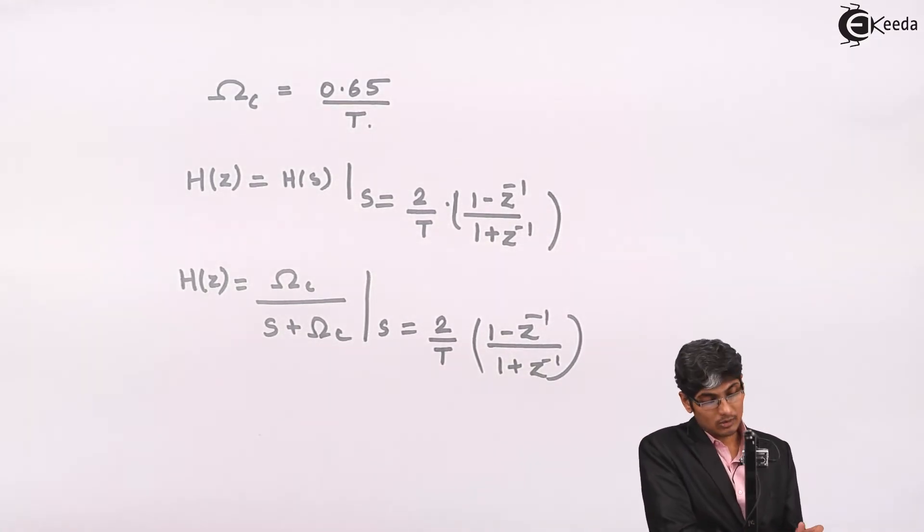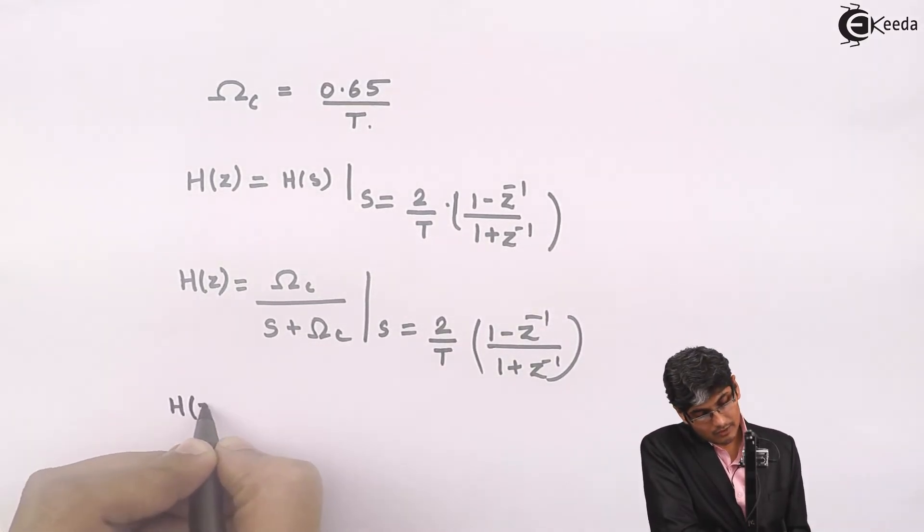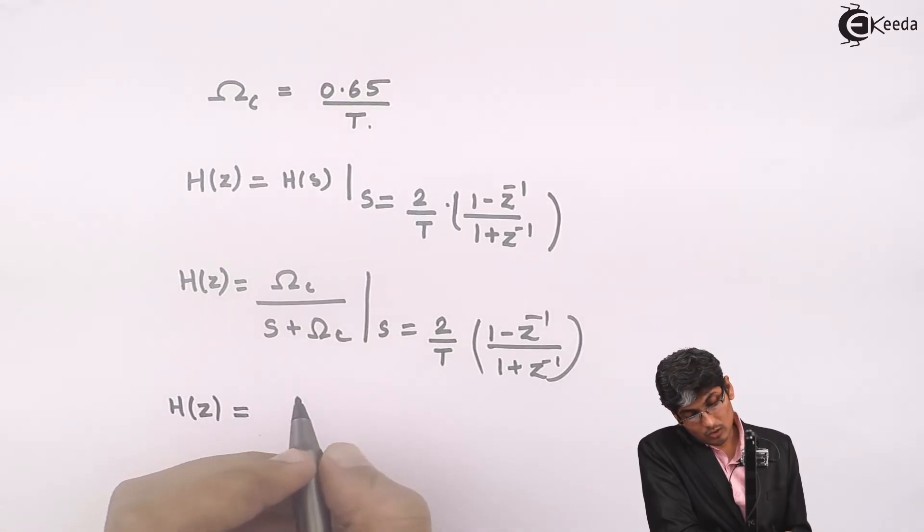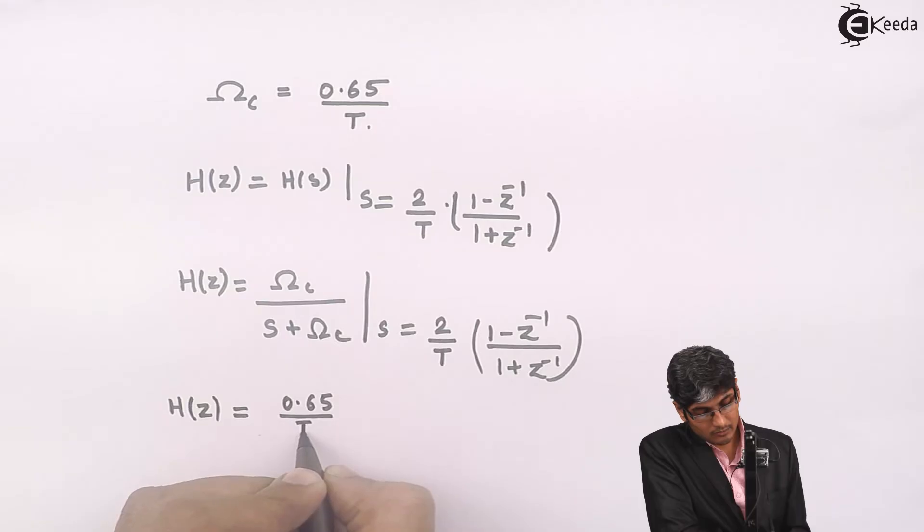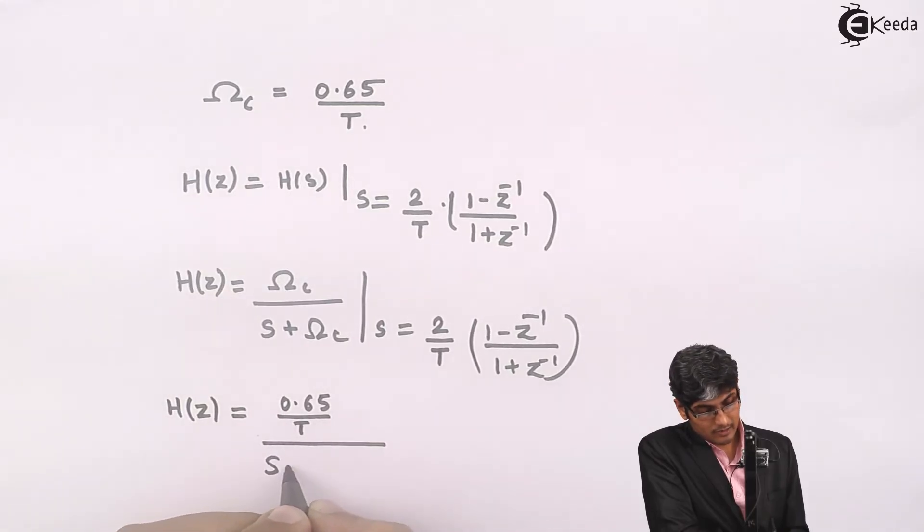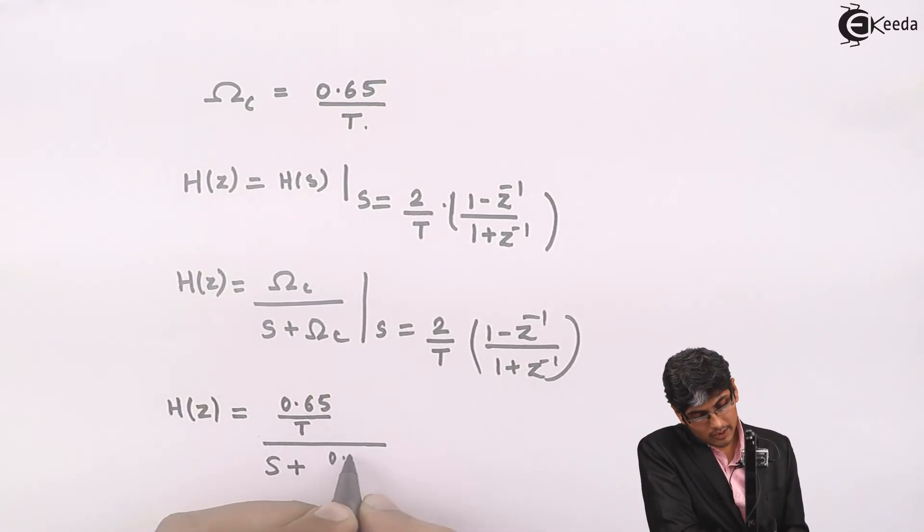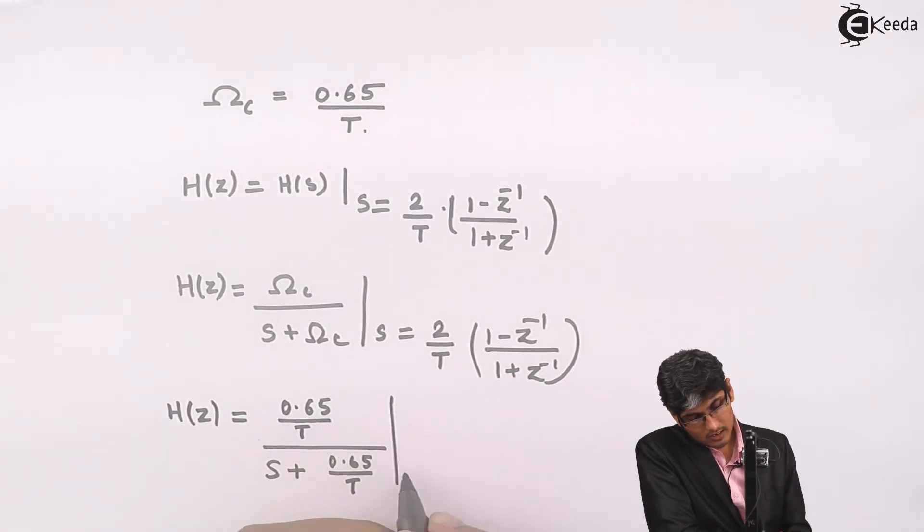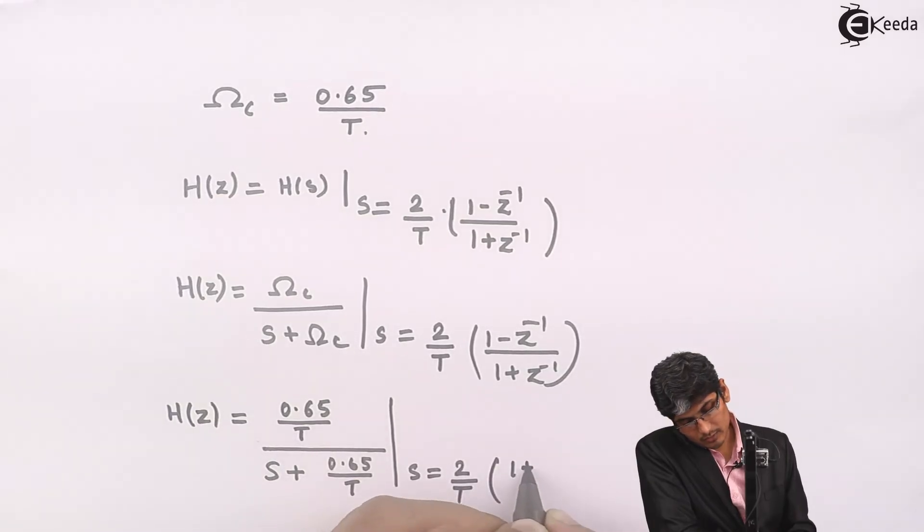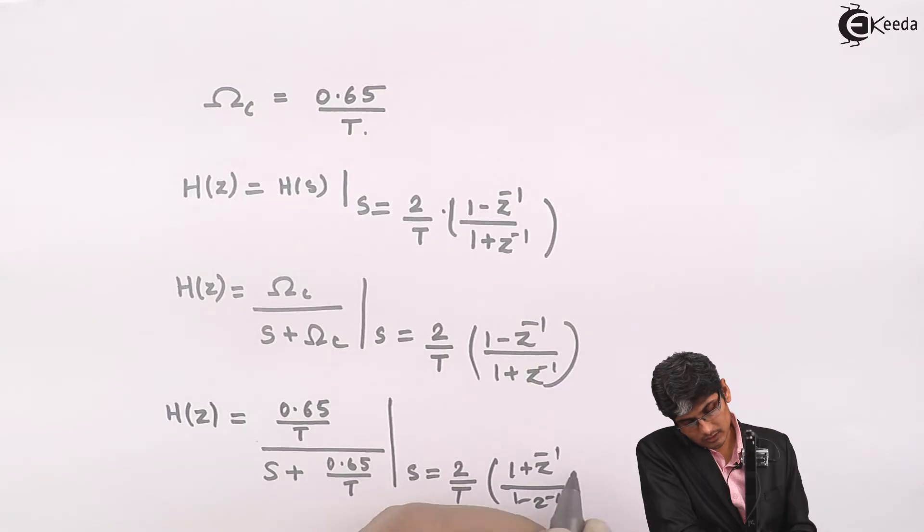So we will have H(z) equals (0.65/T) divided by (s + 0.65/T). I have to put s is equal to (2/T)(1 - z⁻¹)/(1 + z⁻¹).